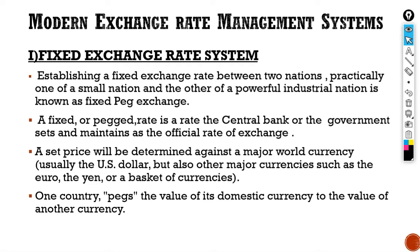In the Nepal and US example, Nepal will peg its domestic currency value to the value of the United States, which is the powerful industrial nation. So in brief, when one nation's rate of exchange is fixed with another powerful nation, it is known as the fixed exchange rate system, and the rate is fixed by the central bank or the government.